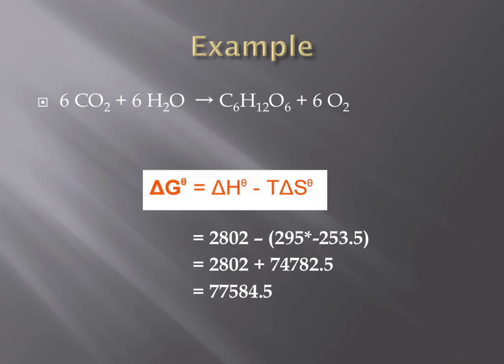Since delta G, or Gibbs free energy, is positive, this reaction is endergonic, it is not spontaneous. In order for this chemical reaction to occur, there needs to be some input of energy. In the case of photosynthesis, energy from the light fuels this process.